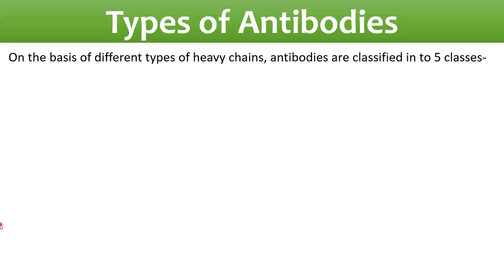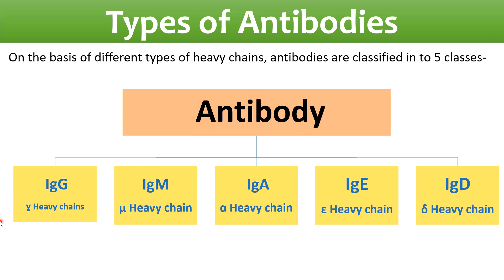Let's understand the different types of immunoglobulins along with their functions. Our body produces five types of immunoglobulins: namely IgG, IgM, IgA, IgE, and IgD. These immunoglobulins are distinguished by the presence of a type of heavy chain in them. IgG accounts for about 75% of antibodies in the blood, IgM accounts for 10%, IgA accounts for 15%, IgE accounts for 0.01%, and IgD accounts for 0.5% of total antibodies in the blood.